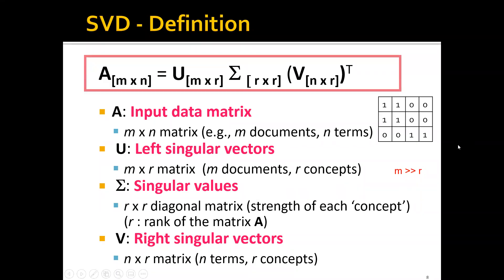Next, let's talk about how to perform dimensionality reduction using SVD, or singular value decomposition. So what's SVD? SVD tries to decompose an input matrix A into three matrices: U, sigma, and V.